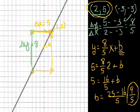So the final equation for the line is y equals 8 over 5x plus 9 over 5. There, we solved it. Let's do another one.